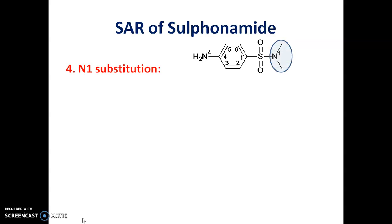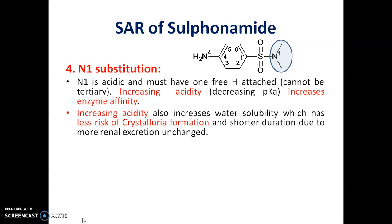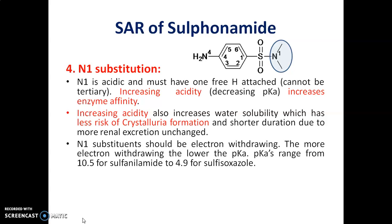The fourth point is about the N1 substitution. N1 is acidic and it must have one free hydrogen attached to it; increasing acidity increases the enzyme affinity. If acidity is increased, the water solubility is also increased, which reduces the risk of crystalluria formation. The N1 substituent should be electron withdrawing — the more electron withdrawing, the lower the pK. For example, in the case of Sulphisoxazole, the pK is around 4.9.